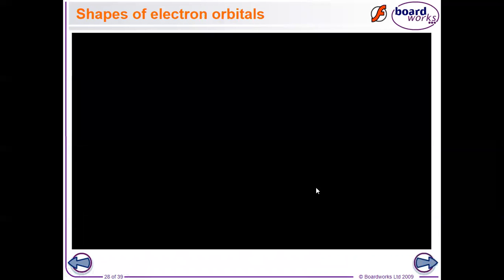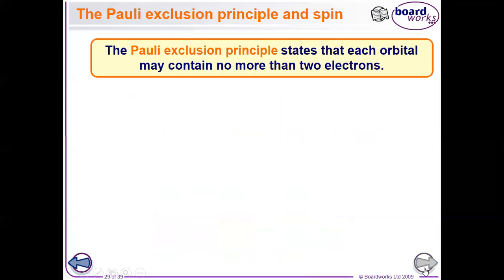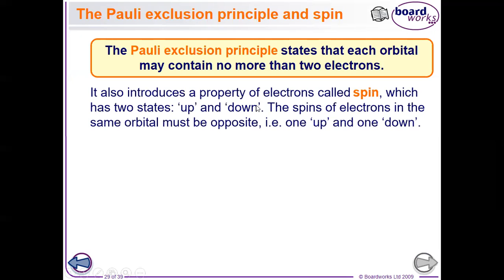There is something important here: the Pauli Exclusion Principle. It states that each orbital may contain no more than two electrons. Also, electrons carry a negative charge, and when two electrons are in the same orbital they experience a repulsion force, since similar charges repel each other.